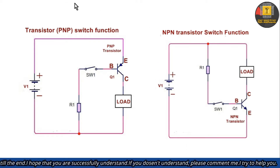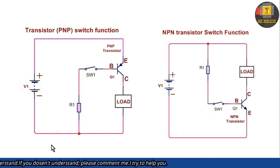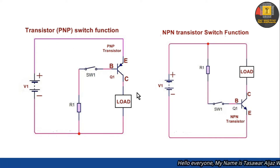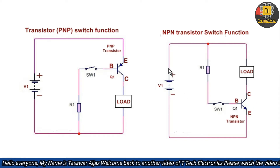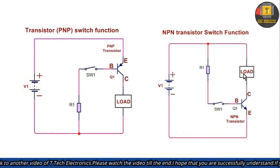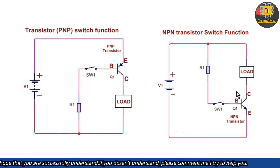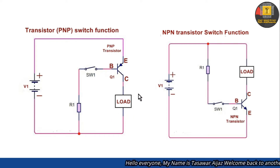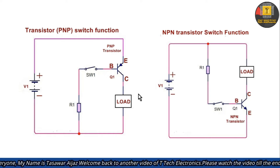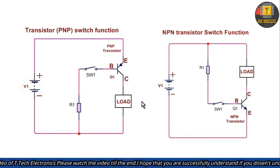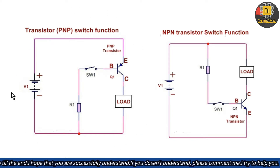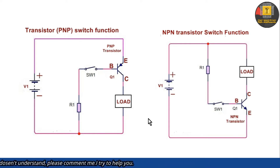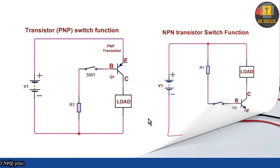پچھلی ویڈیو میں میں نے یہ circuit practically بنایا تھا اور اس ویڈیو میں میں یہ PNP transistor والا circuit practically بنا کر آپ کو دکھاؤں گا۔ دونوں میں ایک main difference ہے کہ اس میں ہم positive transistor کے through flow کروا رہے ہیں اور اس میں negative transistor کے through flow کروایا ہے۔ آگے میں آپ کو یہ بھی بتاؤں گا کہ multimeter سے کیسے identify کرتے ہیں کہ transistor PNP ہے یا NPN۔ چلیئے practical start کرتے ہیں — circuit diagram description کے link سے download کر سکتے ہیں۔